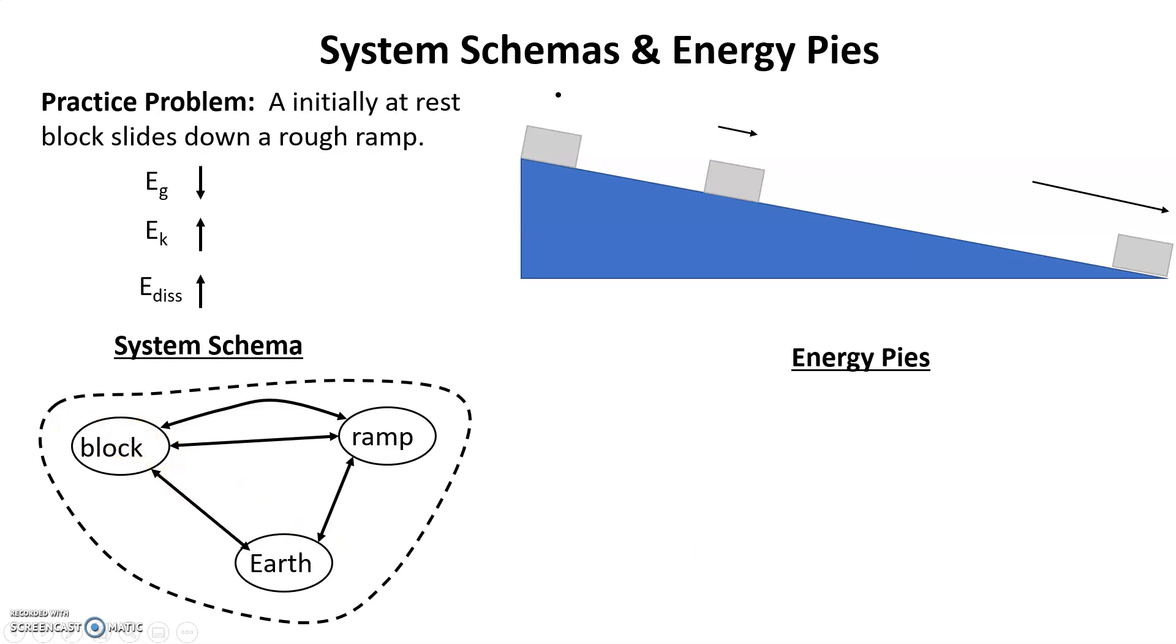I'm going to have this as a pictorial way of remembering. The EG decreases because the height decreases. The EK increases because the speed increases. And the EDIS increases because there's friction, and EDIS always increases. This first block at the top, I'm going to label that A, and I have pi A. The next is B, and I label that pi B, and then C, pi C.